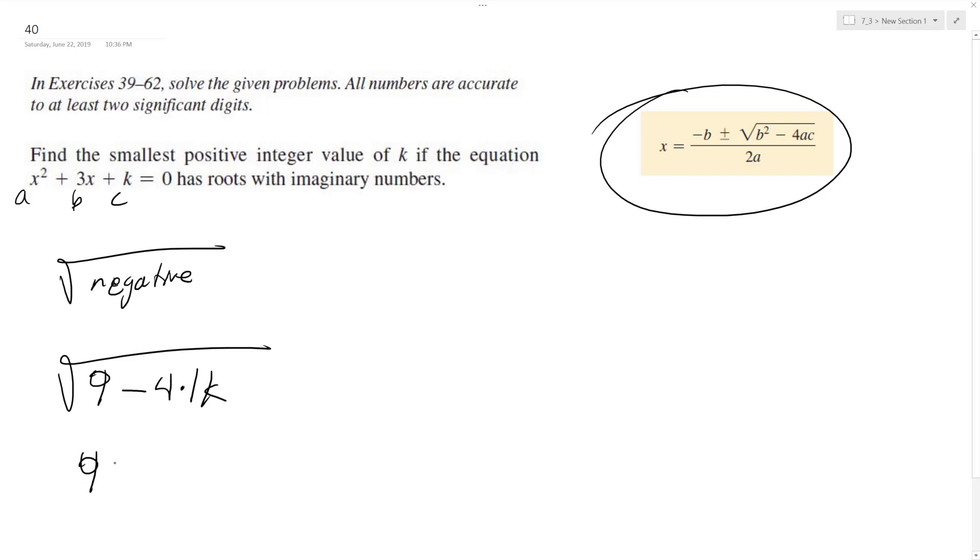So 9 minus 4k must be less than 0. So we have negative 4k is less than, and we move 9 over, so it becomes negative 9, divide by negative 4.